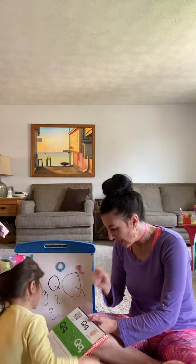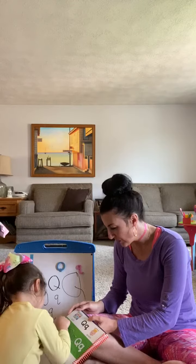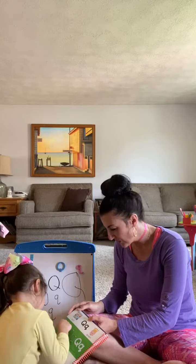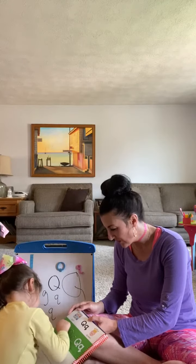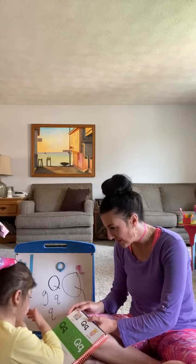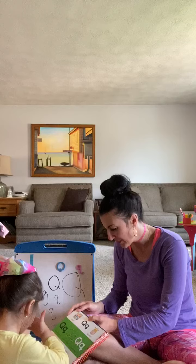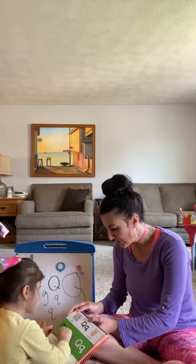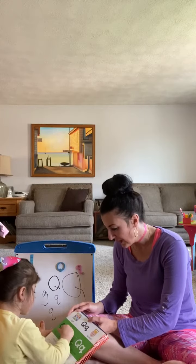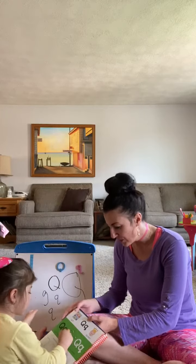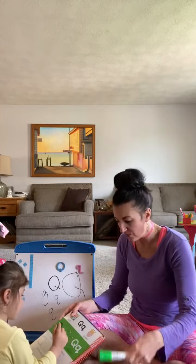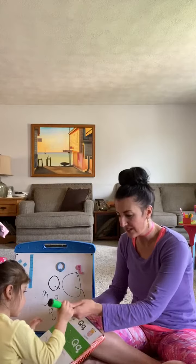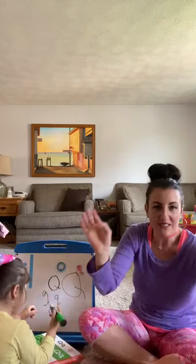Ready? A great big circle, a line right through. Now you've made a capital Q. A circle, a line, a curve. Woohoo! Now you've made a lowercase Q. There's your lowercase Q. There's your letter Q.